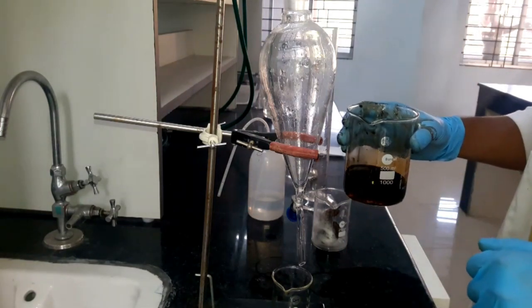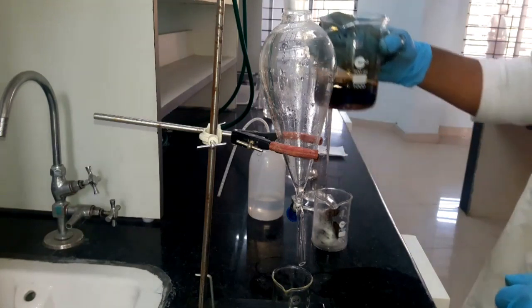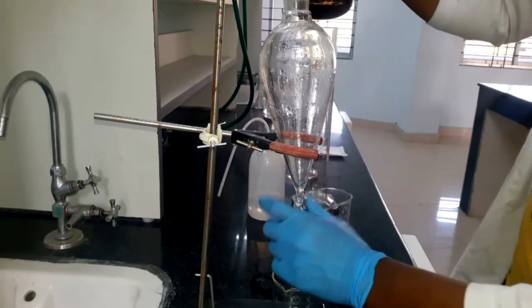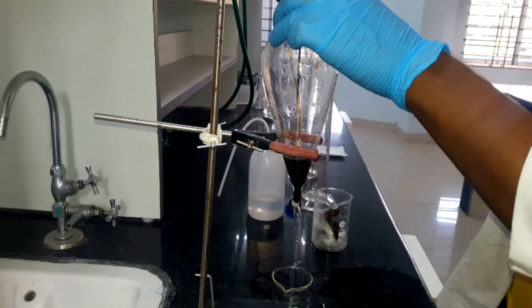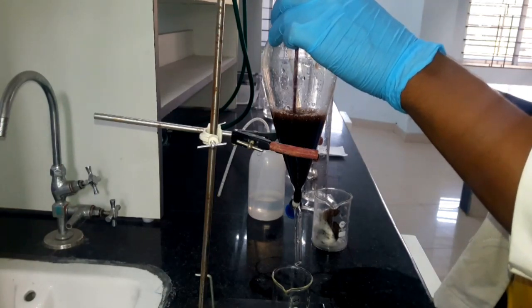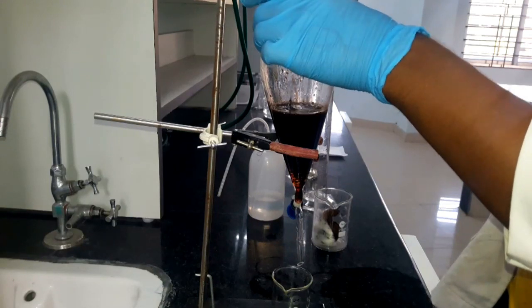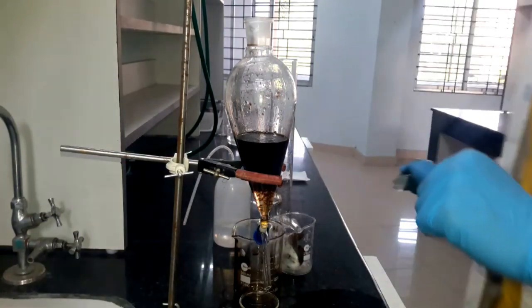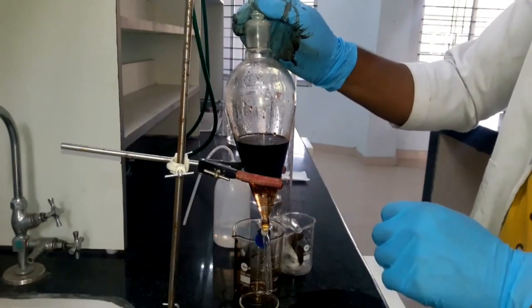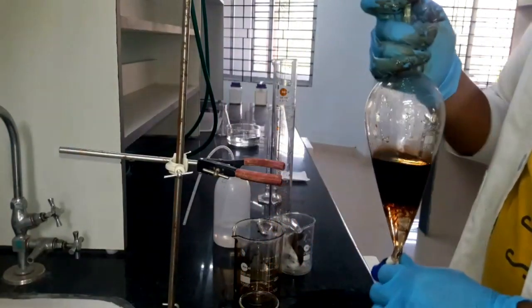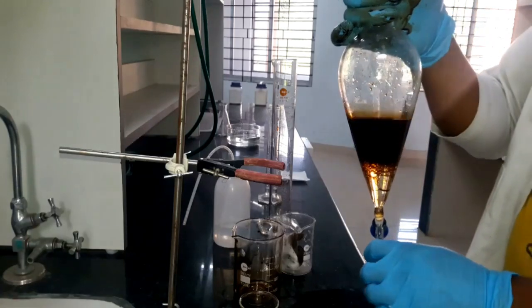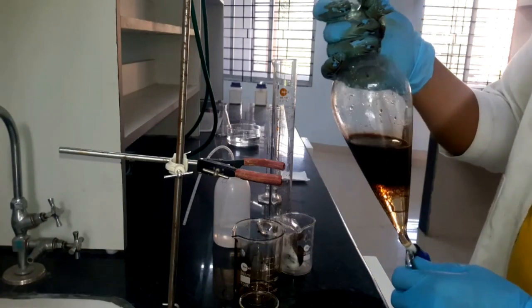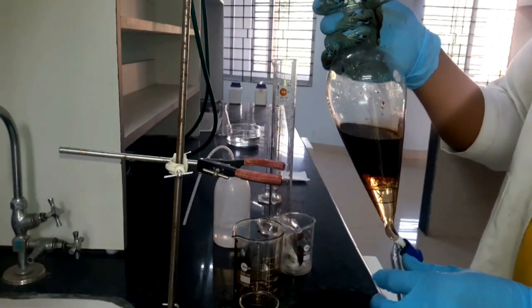The organic layer is extracted by separating it from the top. Now this solution is put in the separating funnel. One important point is that we should avoid vigorous shaking of the separating funnel which may result in emulsion.